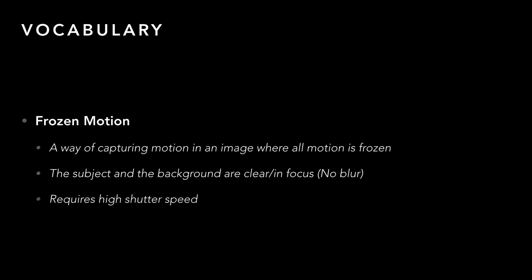The first type of motion we're going to talk about is frozen. As the word frozen suggests, everything in the picture is going to be clear — background, your subject — there's no blur to anything. This is going to require a substantially high shutter speed, ideally outside on a sunny or bright cloudy day. The rule of thumb is generally 1/250th of a second or faster to freeze motion, but the higher you can get that shutter speed the easier it's going to be.